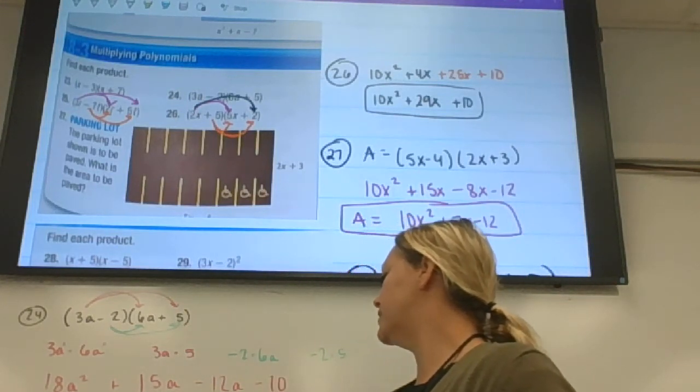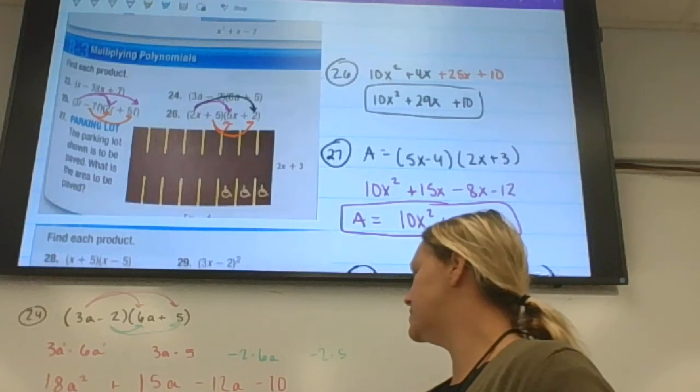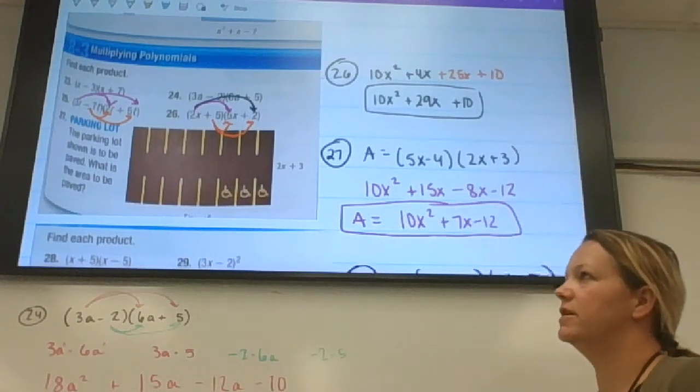18a squared plus 3a minus 10, and then it would be the final polynomial in standard form.